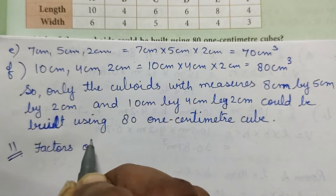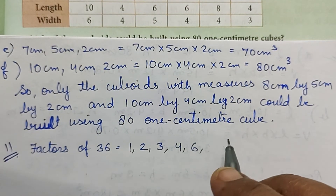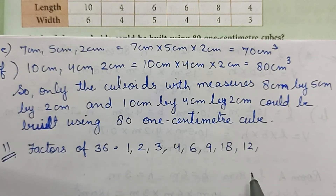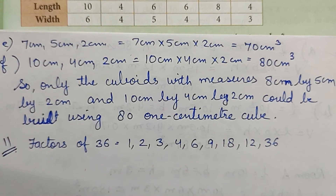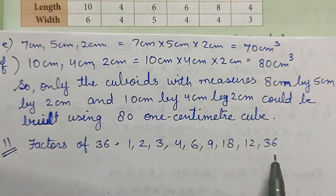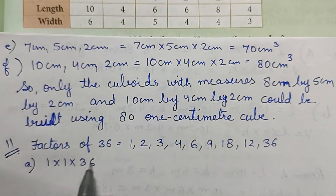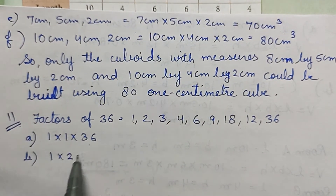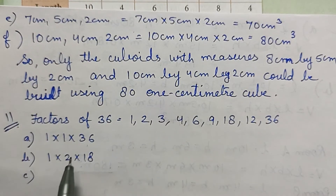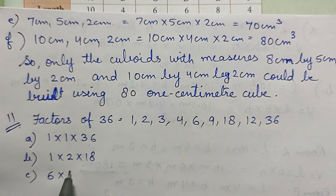Factors of 36 are: 1, 2, 3, 4, 6, 9, 12, 18, and 36. Now we need to take combinations of three numbers from these factors such that their product is 36. Combinations: 1 × 1 × 36, then 1 × 2 × 18. We need to take exactly three numbers because we need to give the three side measurements of the cuboid. So 6 × 6 × 1.